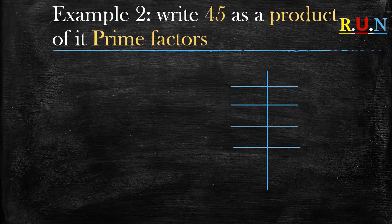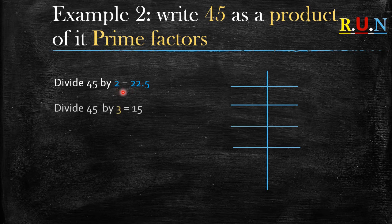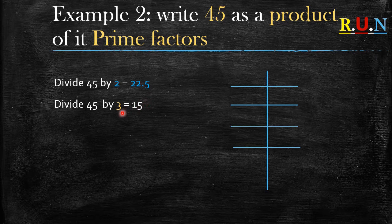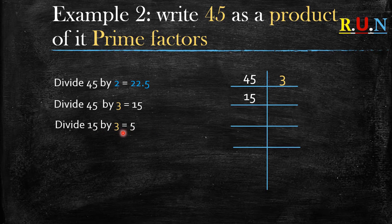Example number two: write 45 as a product of its prime factors. When we divide 45 by 2 we get a decimal, so we skip the first prime number and start dividing with the second prime number, 3. 45 divided by 3 gives us 15, which is a whole number. We write 45 on the left side and 3 on the right. Then we divide 15 by 3, and since it still gives a whole number, we write the answer underneath.